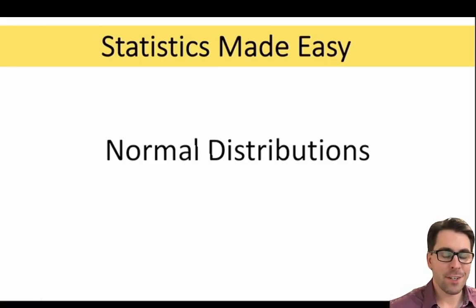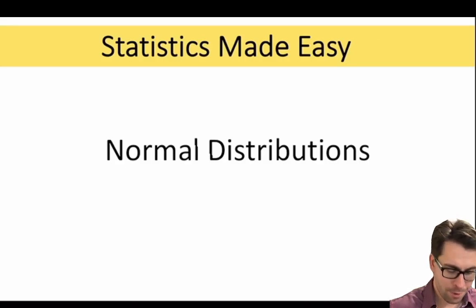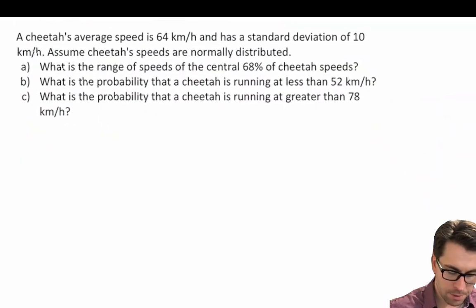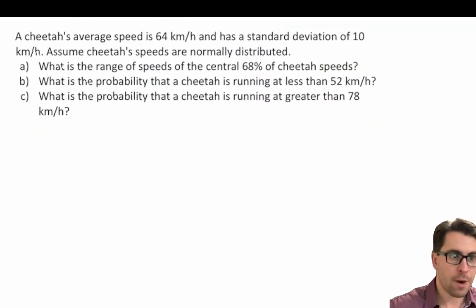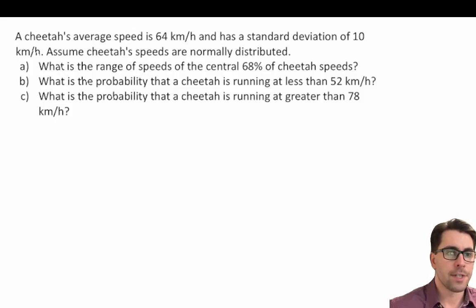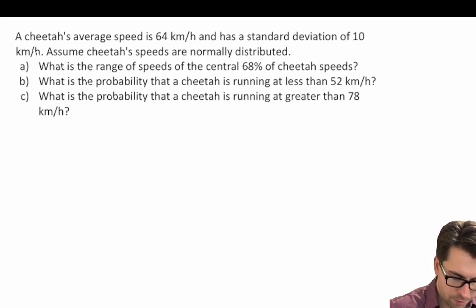In this video we're going to continue our discussion of normal distributions using z-scores. Let's go ahead and do a few practice problems. Here's our first practice problem: a cheetah's average speed is 64 kilometers an hour and has a standard deviation of 10 kilometers an hour. Assume cheetah speeds are normally distributed. What is the range of speeds of the central 68% of cheetah speeds?